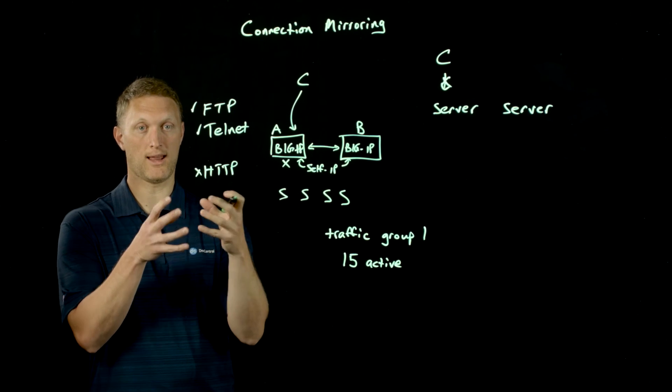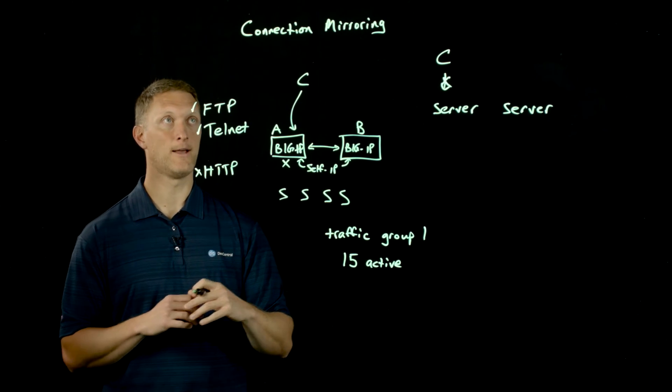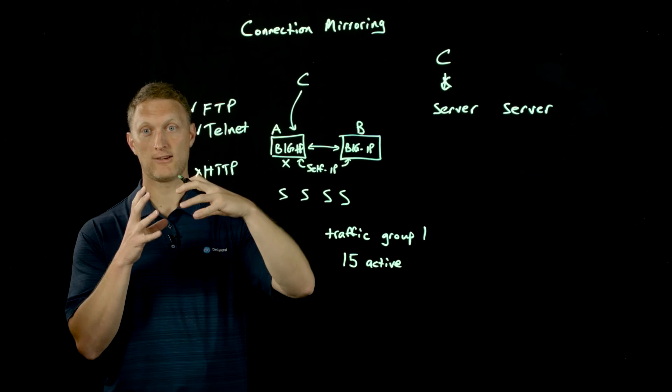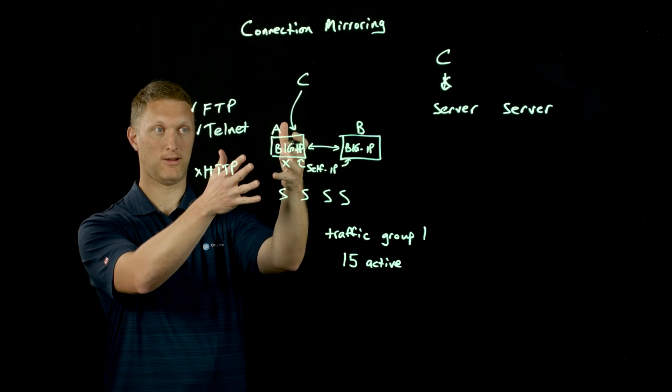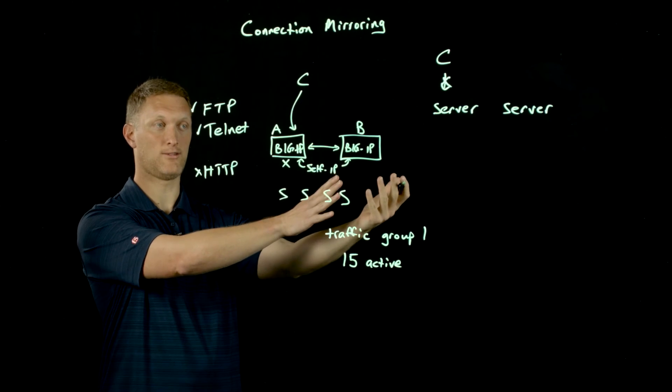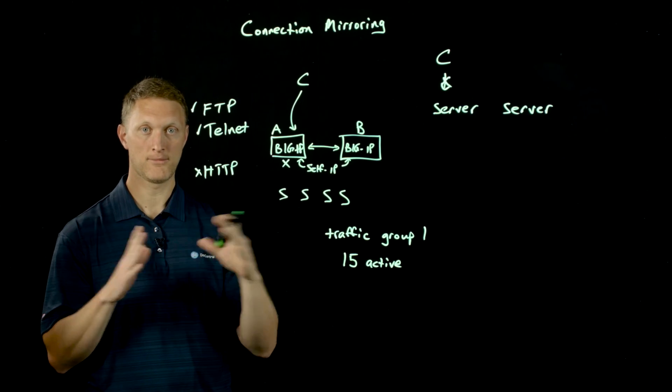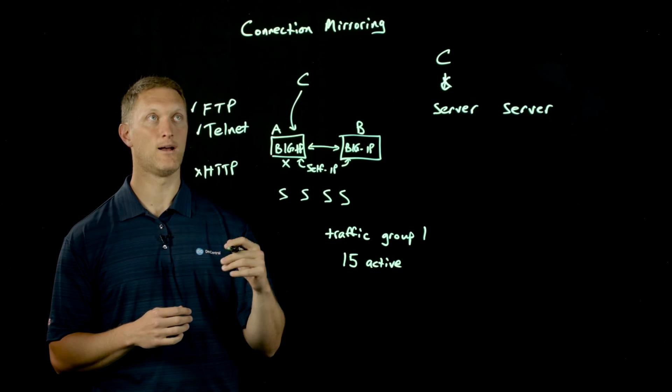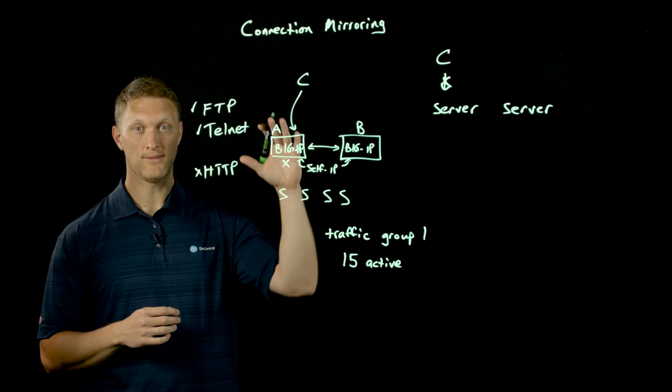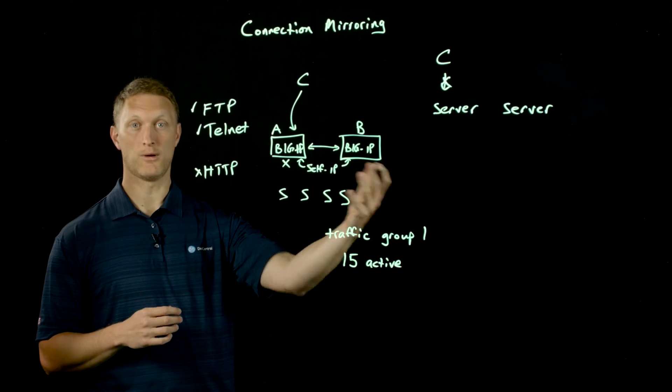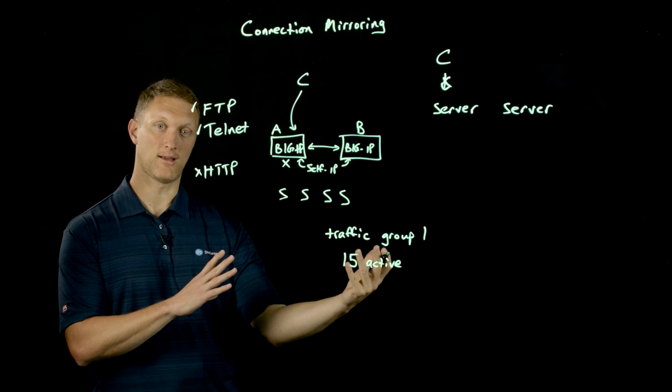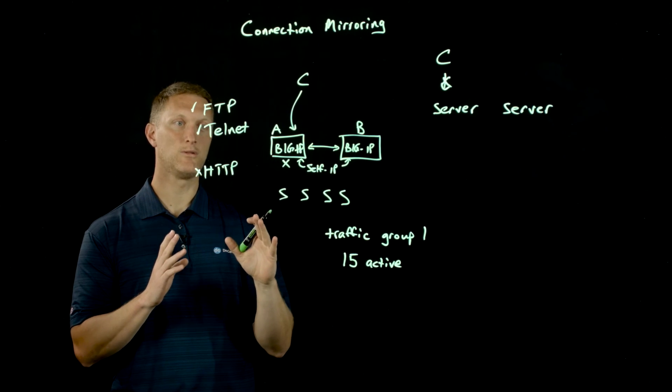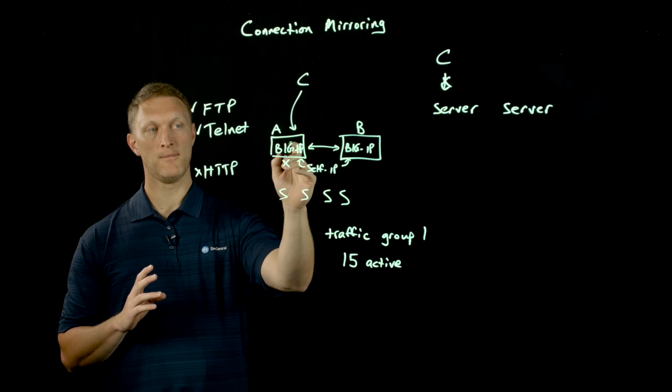I've talked about connection mirroring, so all the connection data that is established here on one BIG-IP is transitioned over to the next one. It's seamless—the end user doesn't know that the failover has happened. Also persistence data is transitioned as well, so any kind of connection and persistence data is mirrored from here to here.